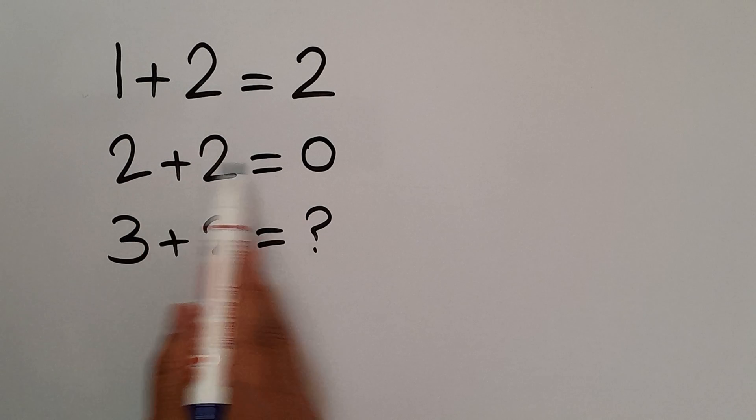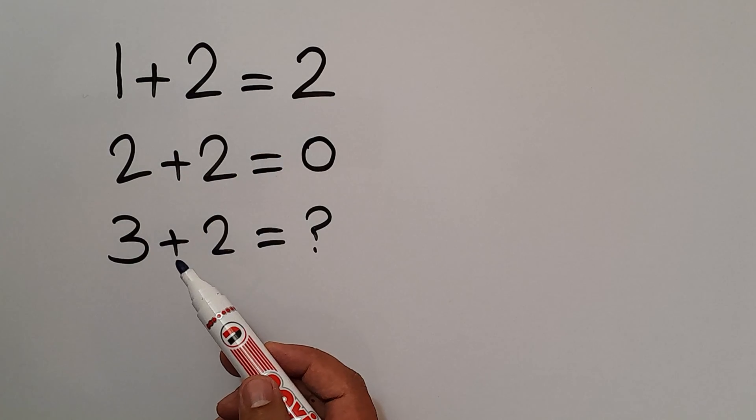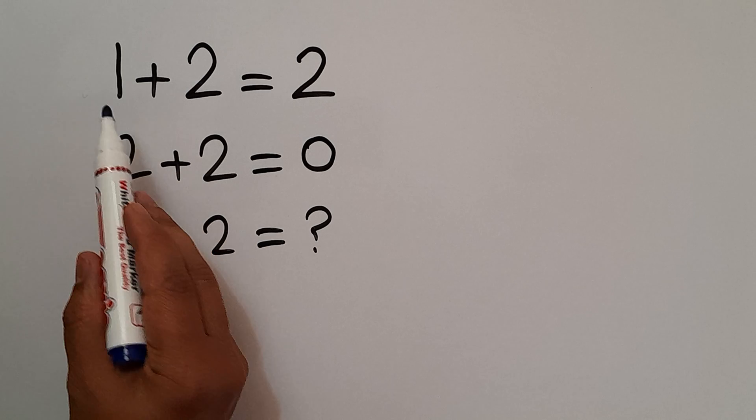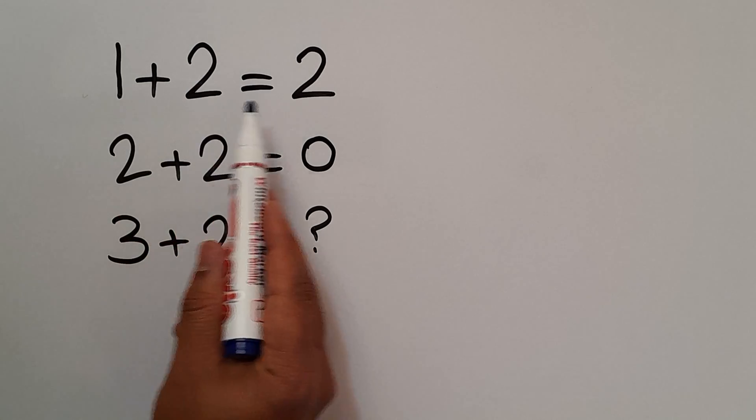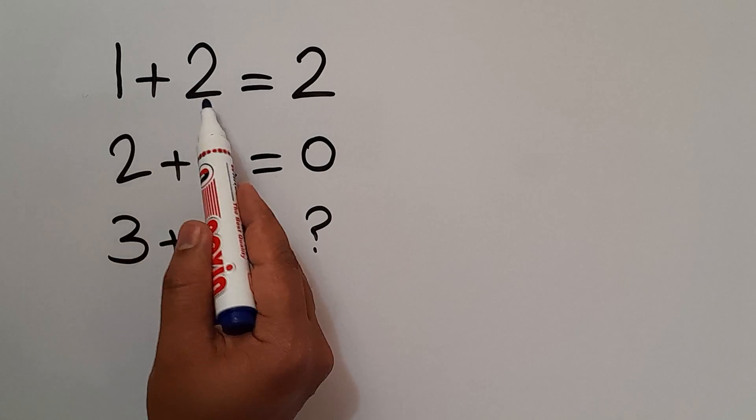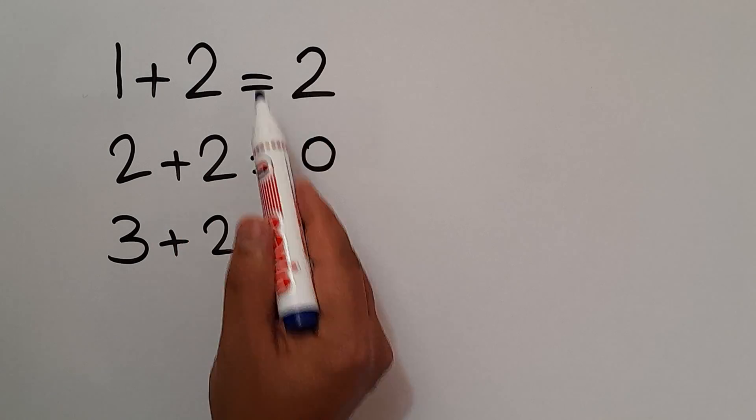In each line, we have three numbers. And we need to find the relationship between these three numbers, the left-hand side numbers and the right-hand side number.